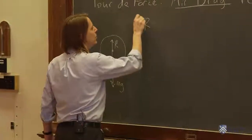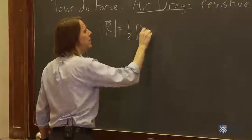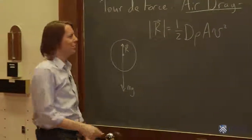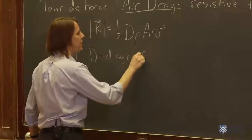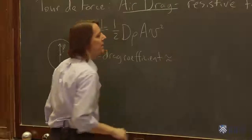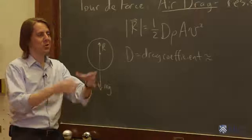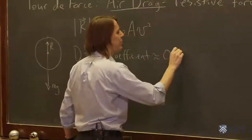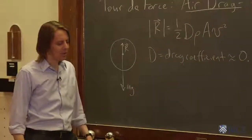The magnitude of the resistive force is one-half d rho A v squared. Let's go through what all those are. d is the drag coefficient, just a number that depends on the geometry. It also depends on how fast you're going and the atmospheric conditions and whether it's laminar or turbulent, but under these typical drop conditions we're doing, it's about a half.